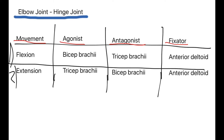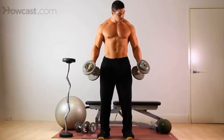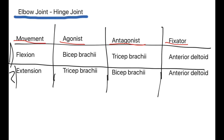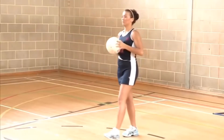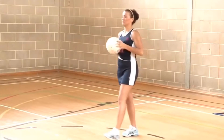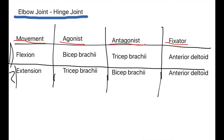Moving on to the elbow joint — this is a hinge joint. The good thing about hinge joints is there are only two movements produced. The first is flexion; the best example is a bicep curl. The agonist is the biceps brachii and the antagonist is the triceps brachii. For extension, a good sporting example is the execution of a netball chest pass — you move the ball from your chest and push it out, extending the elbow. The agonist is the triceps brachii and the antagonist is the biceps brachii. The fixator for both these movements is the anterior deltoid in the shoulder.